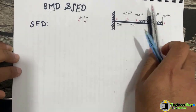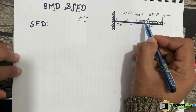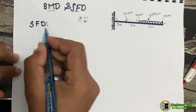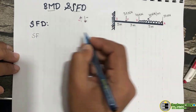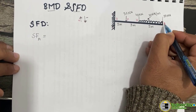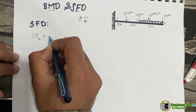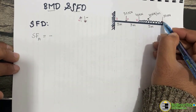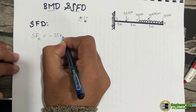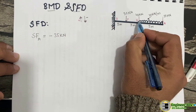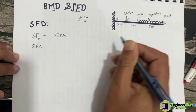To draw a shear force diagram, we need the shear force at each section of the beam. At the free end, point A, we have only one vertical force which is 35 kilonewtons, represented downward in the diagram, so we take that as negative: minus 35 kilonewtons.